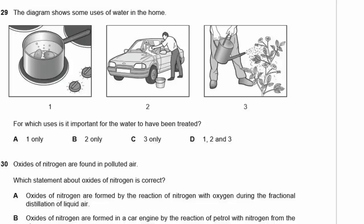Question 29. The diagram shows uses of water at home: cooking, washing the car, and watering plants. For which uses is it important for the water to have been treated? You definitely want treated water for cooking. Washing your car — not really necessary. Watering plants — no, you don't need it treated for that. So the answer is A — cooking only.